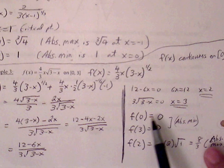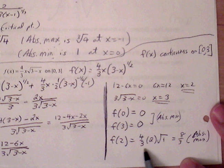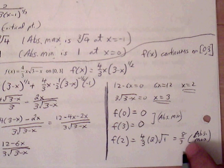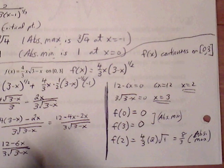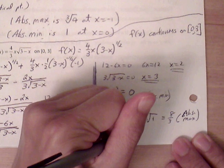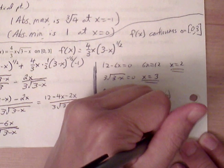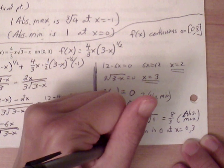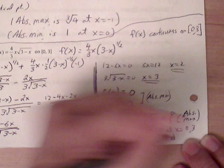Plugging in 0 gives 0. Plugging in 3 gives 0. Plugging in 2 gives (4/3)(2)(√1) = 8/3. Comparing these values, 8/3 is the largest, so that's the absolute max. Zero is the smallest, so that's the absolute min. The absolute minimum is 0 at x equals 0 and x equals 3, and the absolute maximum is 8/3 at x equals 2.